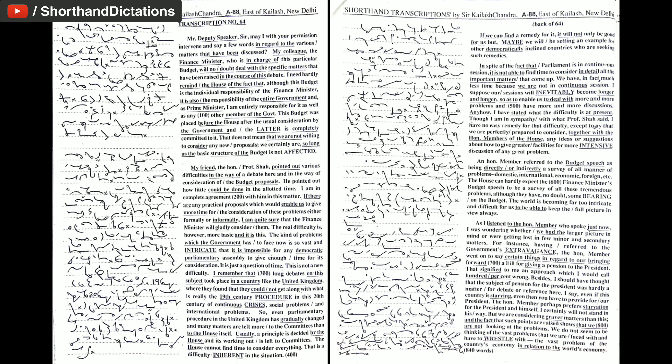Usually, a principle is decided by the House and its working out is left to committees. The House cannot find time to consider everything. That is a difficulty inherent in the situation. If we can find a remedy for it, it will not only be good for us but maybe we will be setting an example for other democratically inclined countries who are seeking such remedies. In spite of the fact that Parliament is in continuous session, it is not able to find time to consider in detail all the important matters that come up.